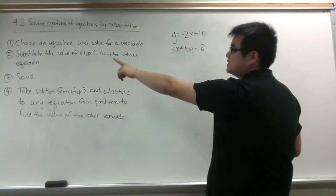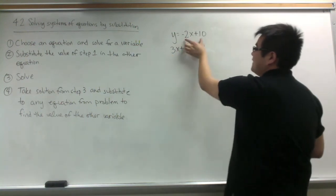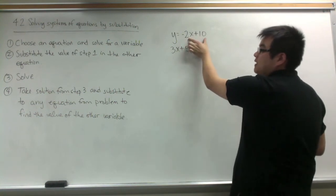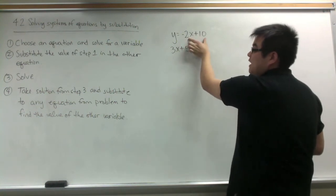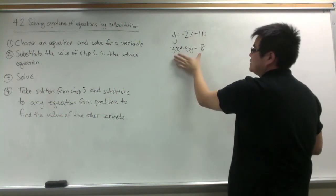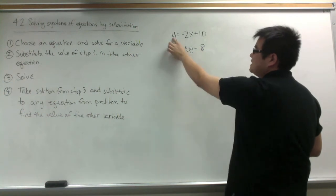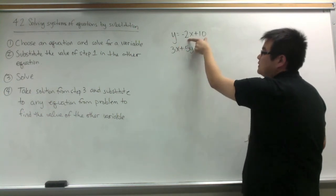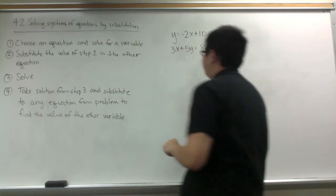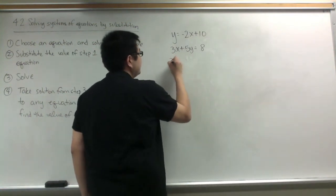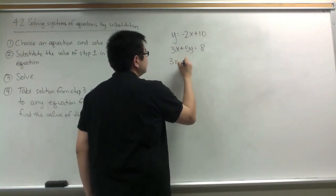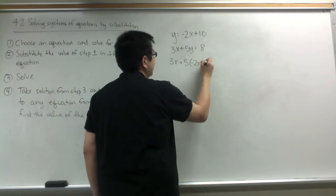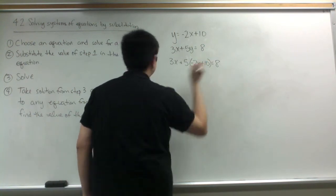Step 2 says substitute the value of step 1, so the value of step 1 would be negative 2x plus 10, in for the other equation. Every time I see the variable y, I'm going to replace it with negative 2x plus 10. So I have 3x plus 5 times negative 2x plus 10 equals 8.